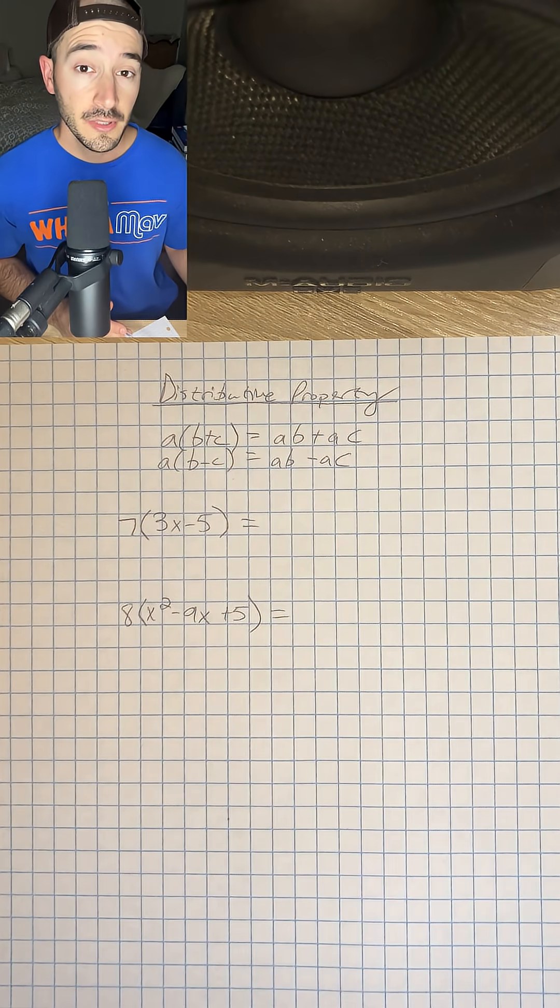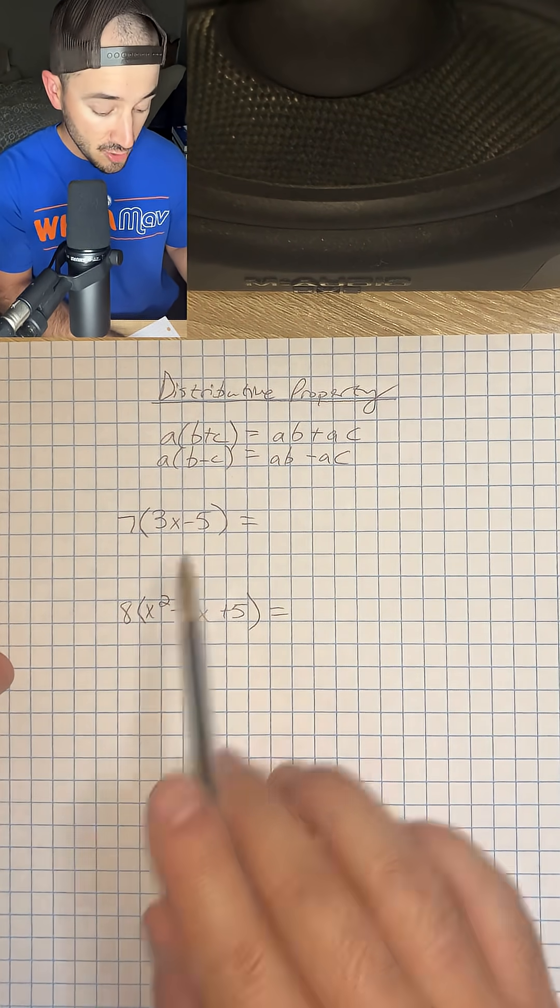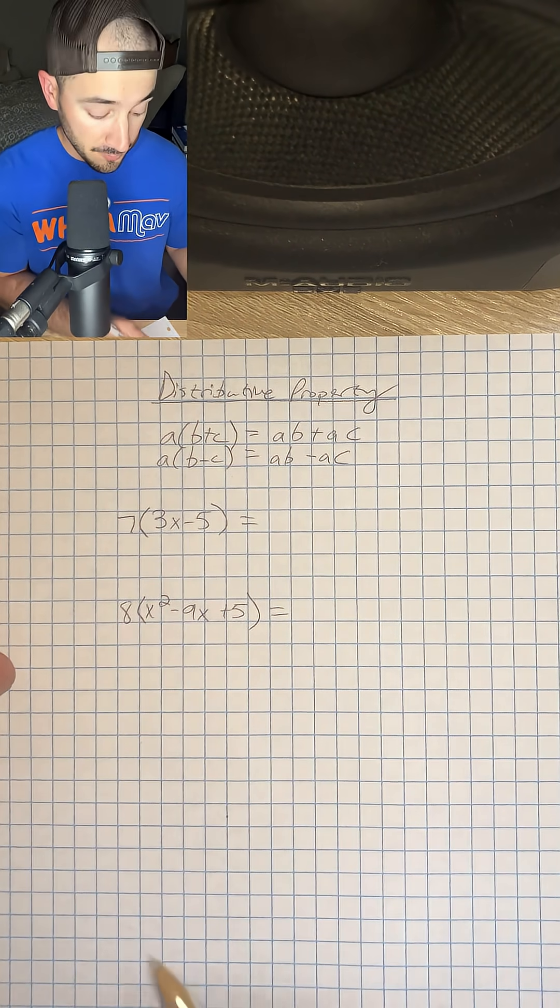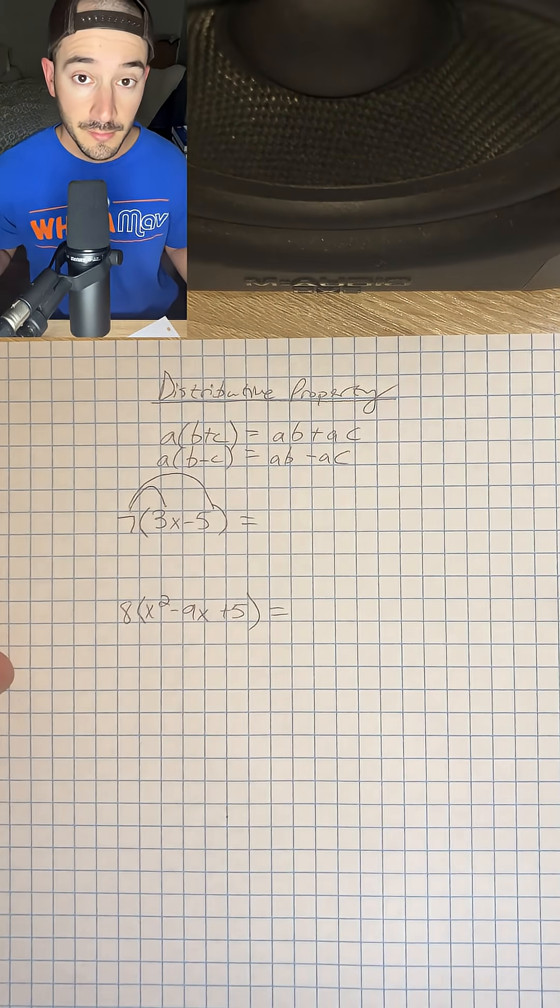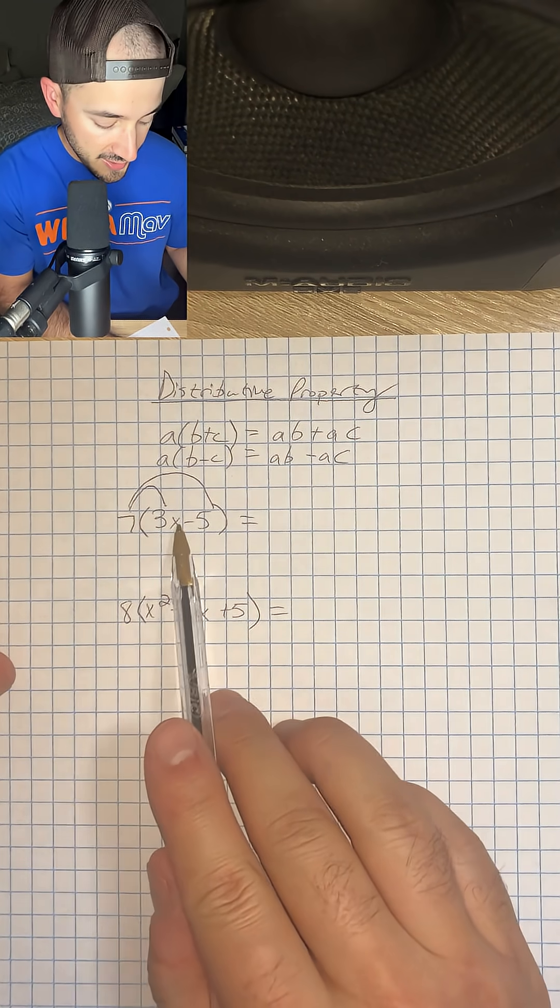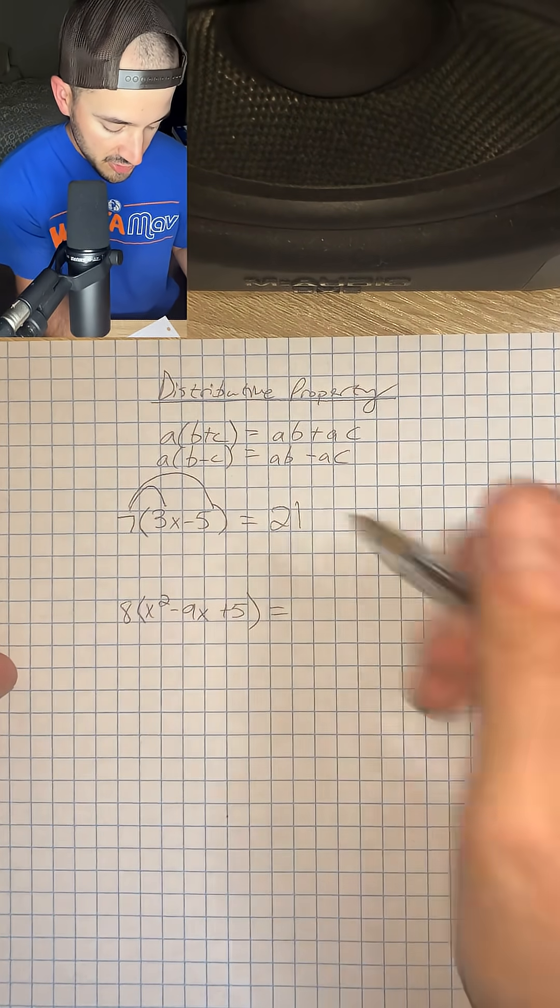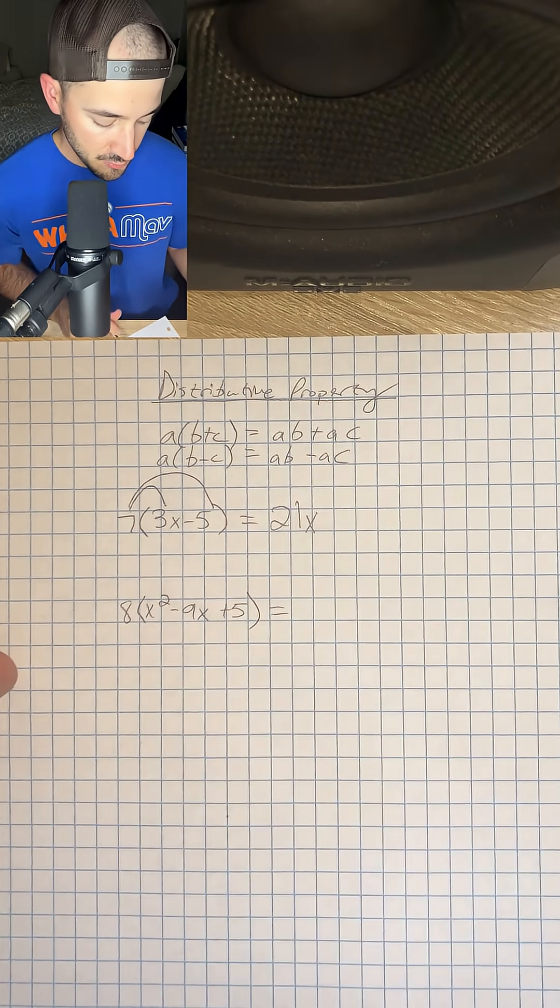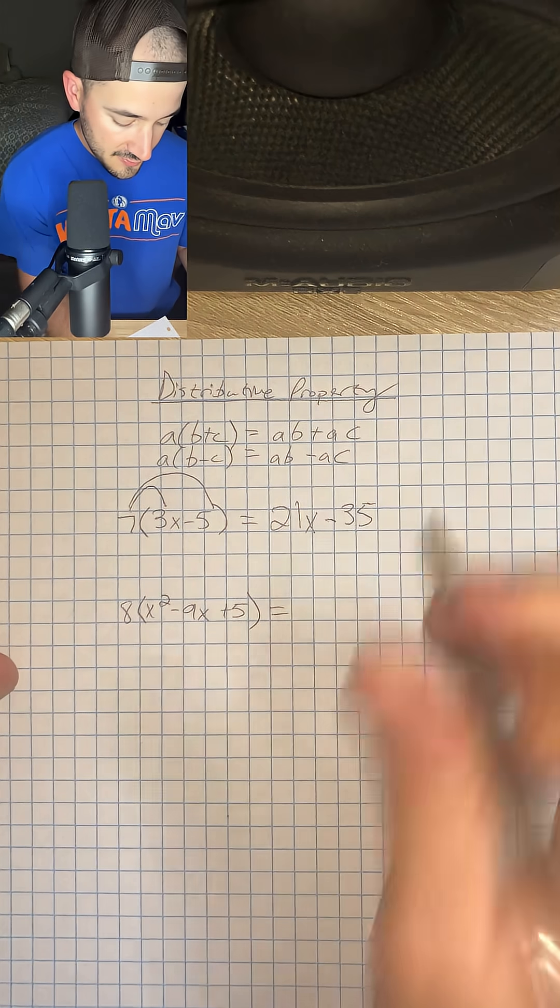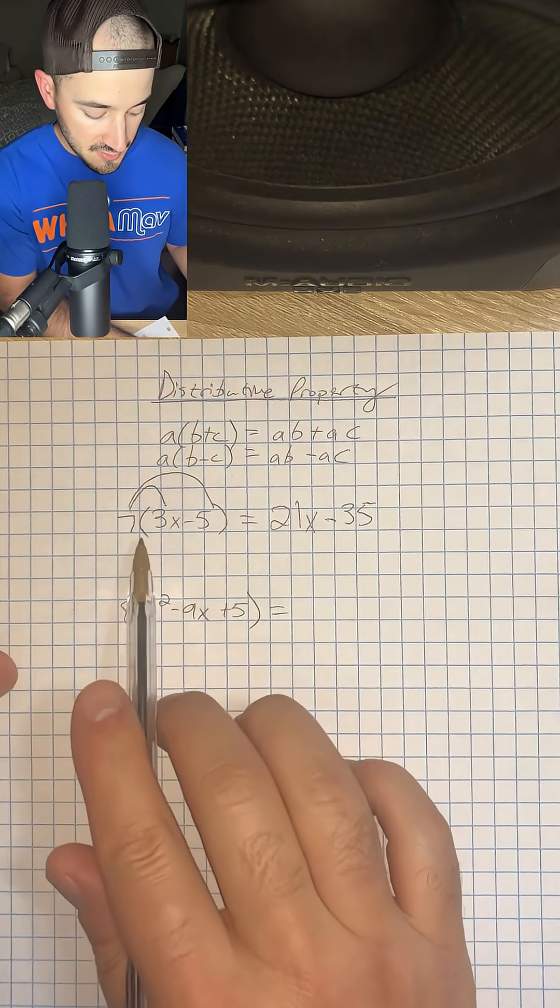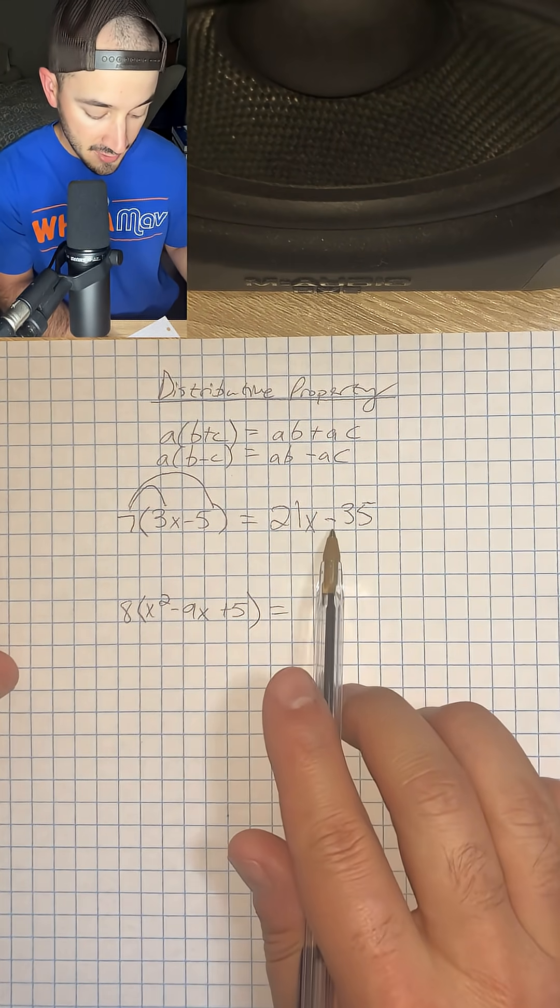So let's go ahead and do a couple of examples. We have 7 times parentheses 3x minus 5. We're going to distribute our 7 to both terms inside the parentheses and just multiply. So 7 times 3x, well 7 times 3 is 21, and then we let our x be there as well. And then 7 times negative 5 is negative 35, so minus 35. So that expression is equal to 21x minus 35.